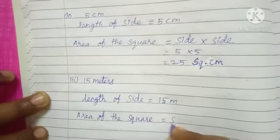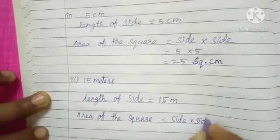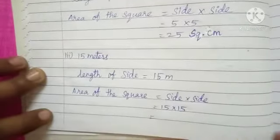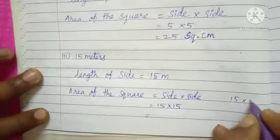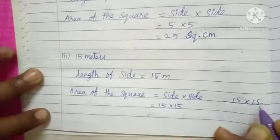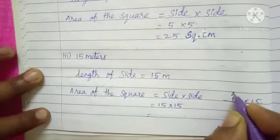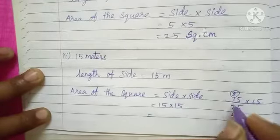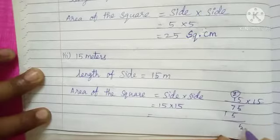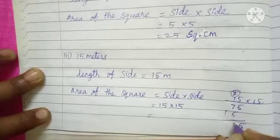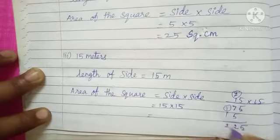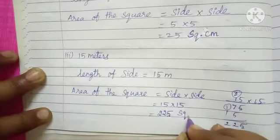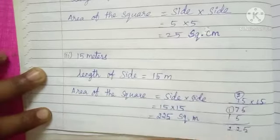Third sum: area of square equals side multiply side. So 15 multiply 15. Working it out: 5 fives are 25, carry 2; 5 ones are 5, plus 2 is 7; 1 five is 5; 1 one is 1. Then 7 plus 5 is 12, carry 1; 1 plus 1 is 2. So 15 multiply 15 equals 225 square meter.